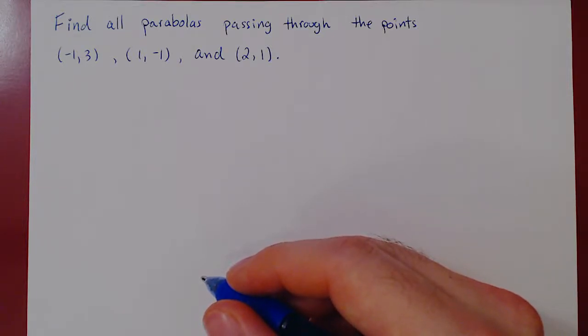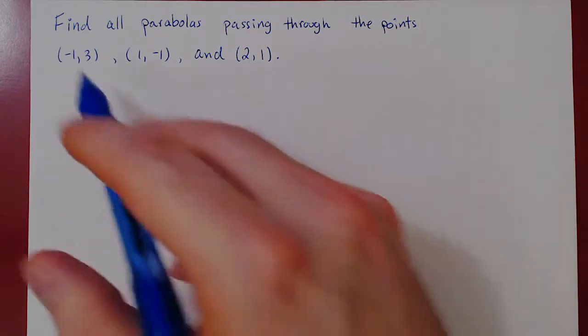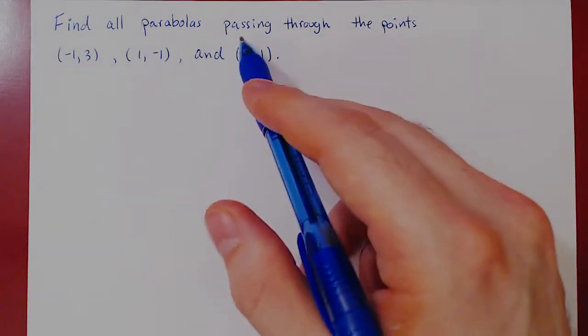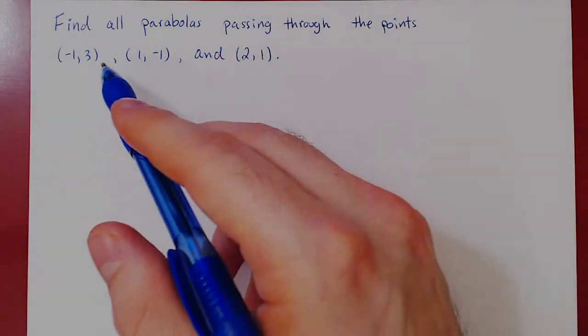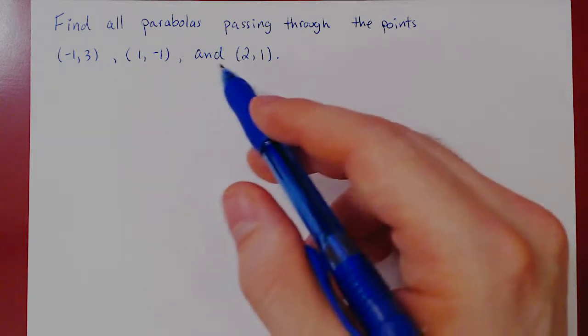In this video, we will consider an application of linear systems. So here's the problem. We want to find all parabolas, so a quadratic equation, passing through the points (-1,3), (1,-1), and (2,1).